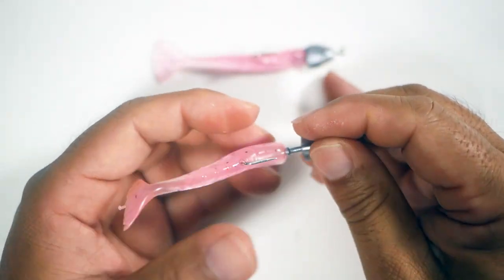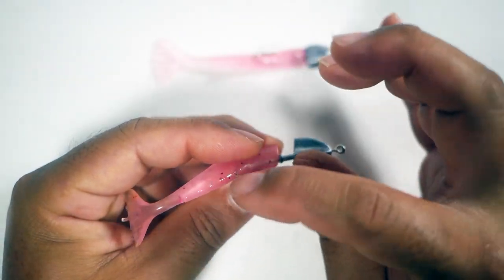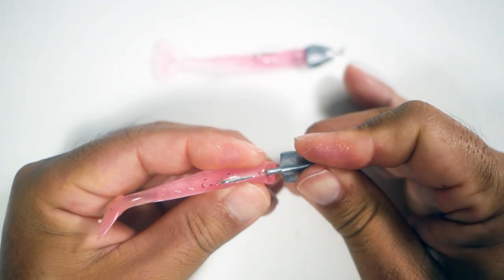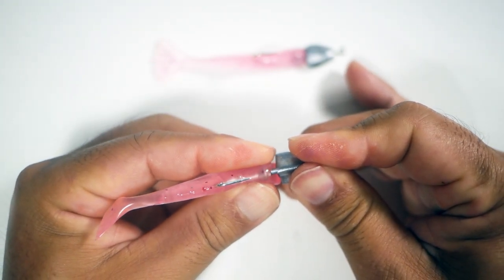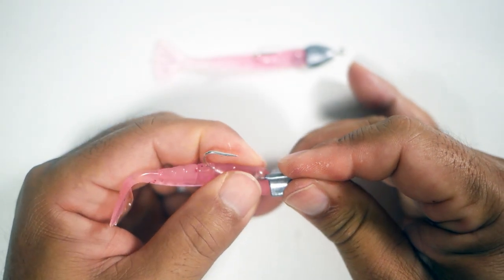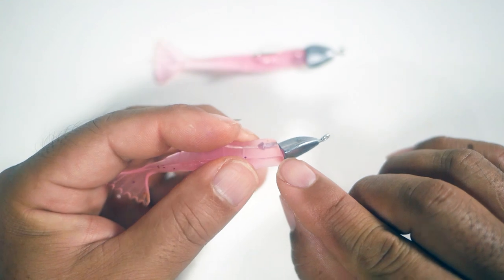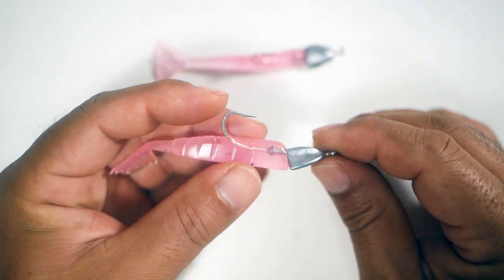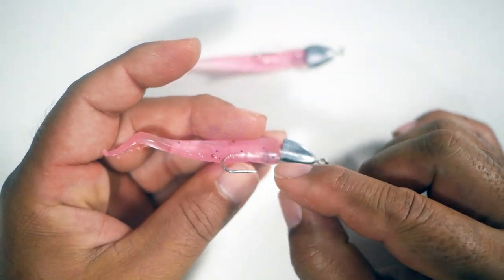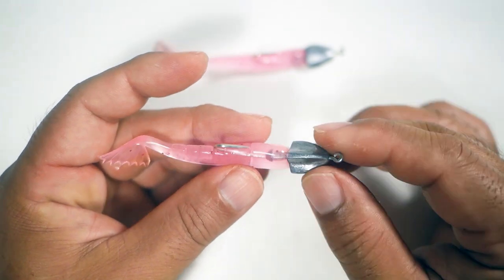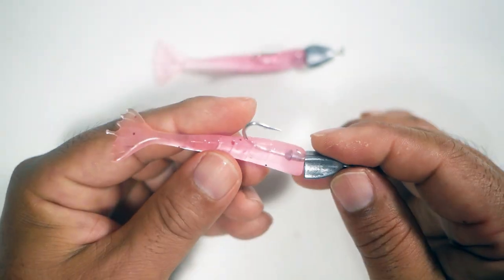Bring it around, got center to center. Insert the bait keeper. And there we go. So bottom flush, bottom flush. Center spine, center spine. And that is perfectly rigged.